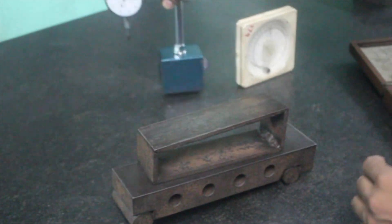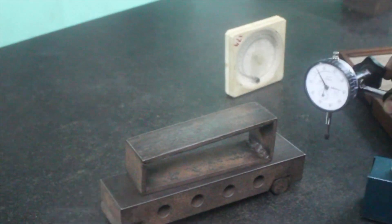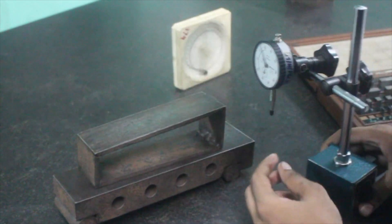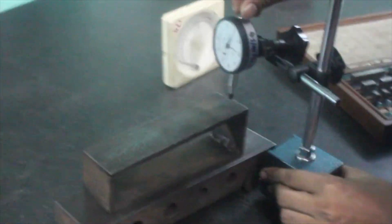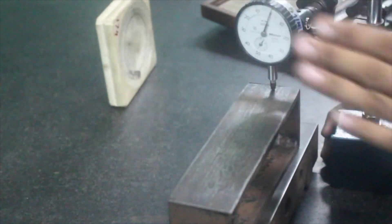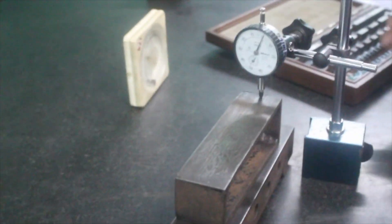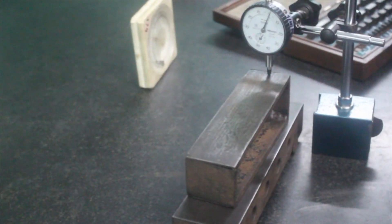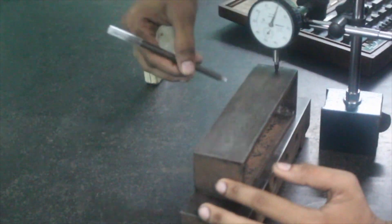We are going to check whether the surface is flat or not. For that, we use a dial gauge with a plunger available here. First, we keep this in the initial position and set it to 0 value. Now we have the initial base reference value 0. We will draw two reference lines, one here and another here. Then a line joining these two points will be drawn.